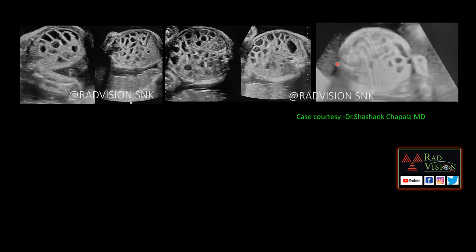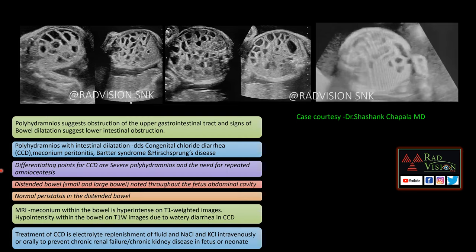Whenever you see these imaging features on ultrasound, definitely suspect congenital chloride diarrhea (CCD). Other causes of polyhydramnios with intestinal dilatation include meconium peritonitis, Bartter syndrome, and Hirschsprung disease. These three conditions have clinical features that help differentiate CCD from other causes. MRI also helps: bowel fluid is hyperintense on T1-weighted images in meconium ileus, whereas it is hypointense on T1-weighted images in watery diarrhea and CCD.